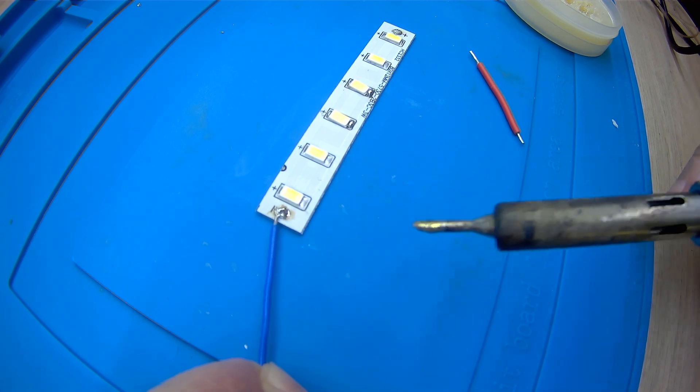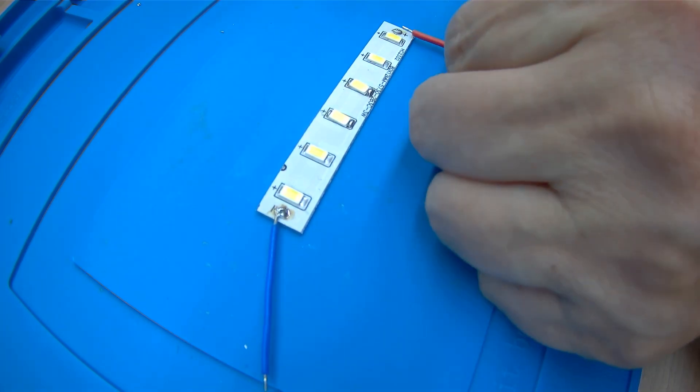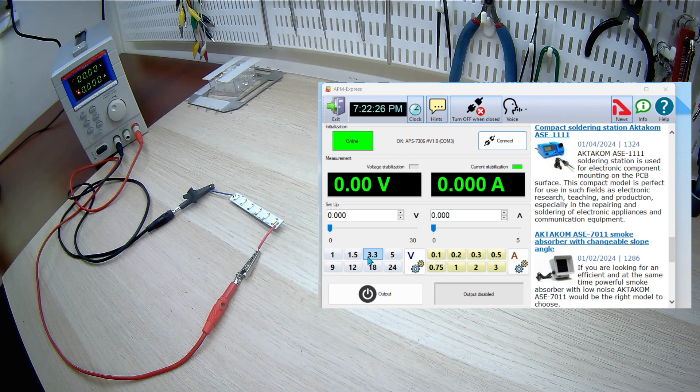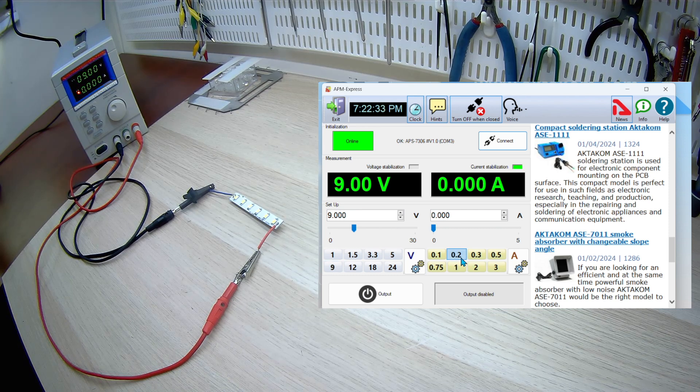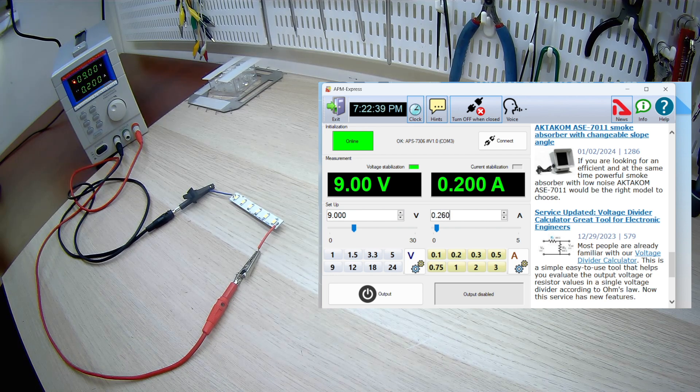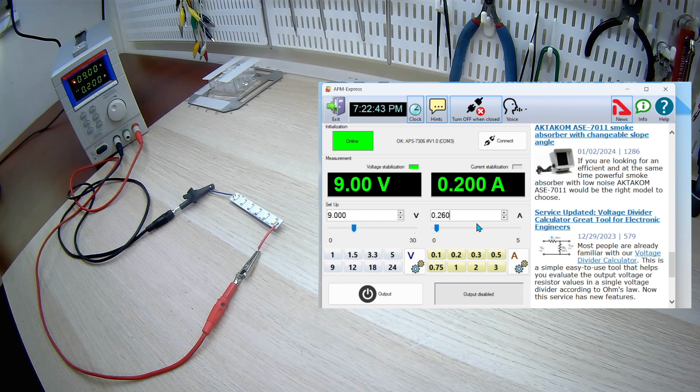To test the repaired LED strip, we will install temporary wires. We will test the entire strip of LEDs using the Octacom APS7307 programmable power supply. From the connection diagram, we know that the LED strip operates at 9V and the current should not exceed 260 mA as indicated on the lamp driver.